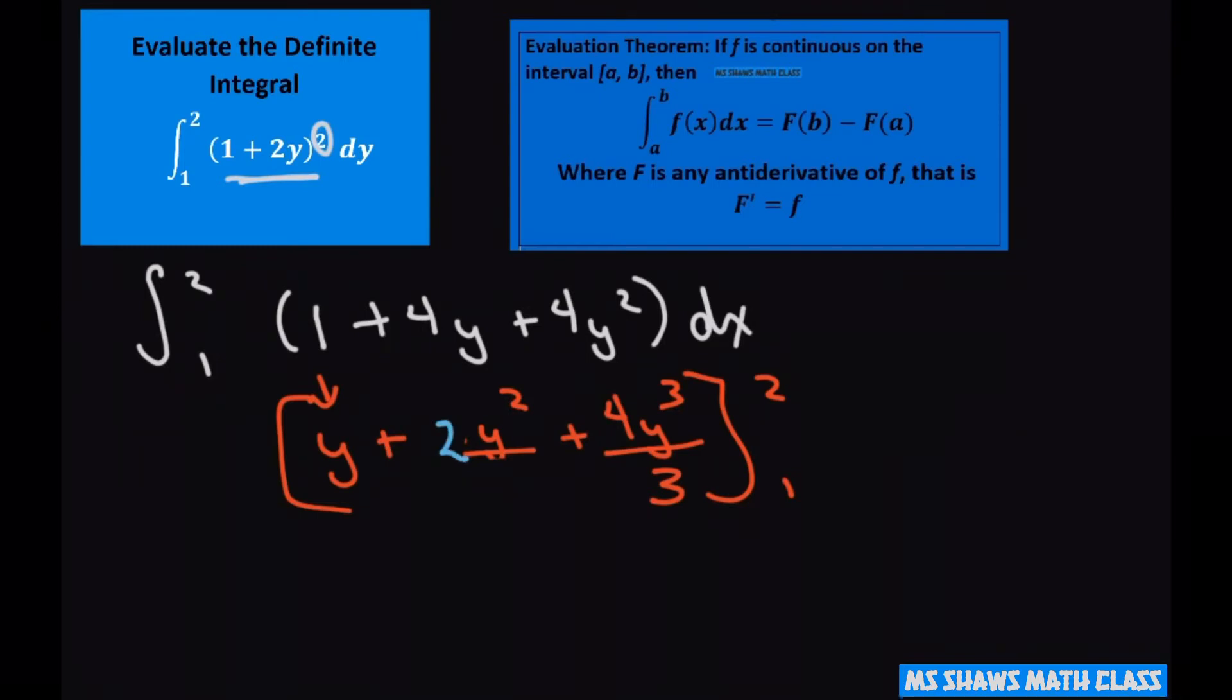And now this is your f, and now we're going to do f of 2 minus f of 1 using our evaluation theorem.